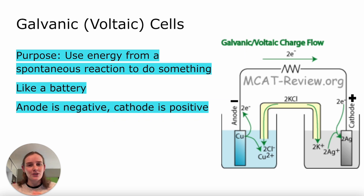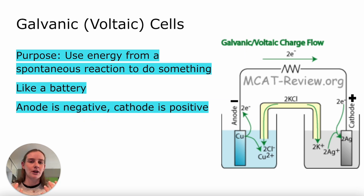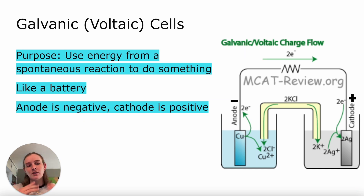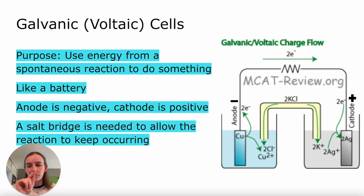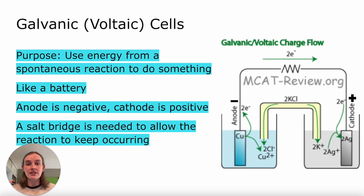In a galvanic cell, we have our anode, which is going to be negative, and our cathode, which is going to be positive. The way I like to remember this is that our cathode has a T, just like positive is a plus sign. So the cathode in a galvanic cell is always positive, and the anode — 'an' meaning not — is negative. Also, the yellow salt bridge you can see in the diagram is necessary for the reaction to keep occurring at the same efficiency. Without it, ions would build up on both sides and the reaction would no longer favor the spontaneous forward reaction.